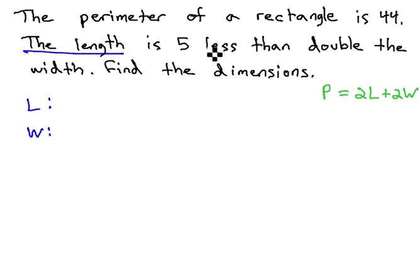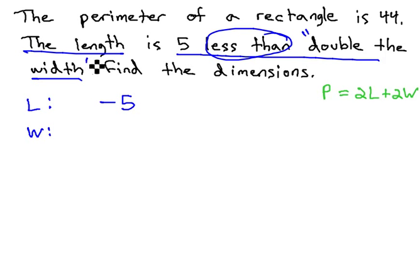The length, we're told, is 5 less than double the width. 5 less than means we're subtracting 5, because subtraction is built backwards, subtracting 5 from double the width. It means we need to take the width and multiply it by 2. We aren't given the width, so let's just say it's x.